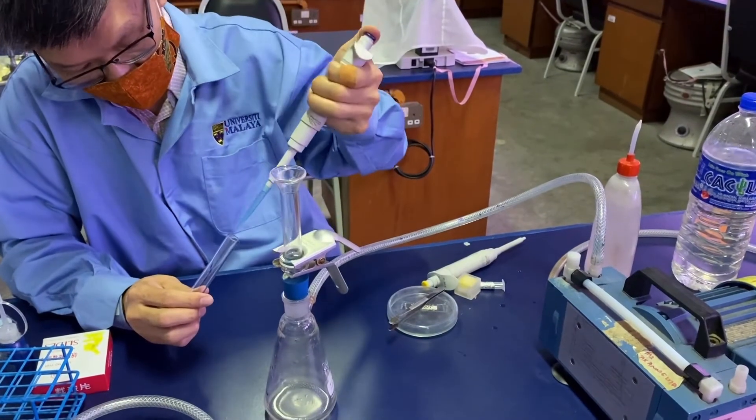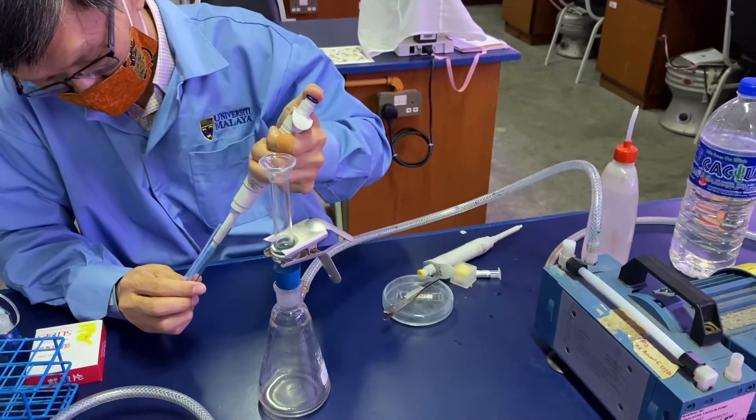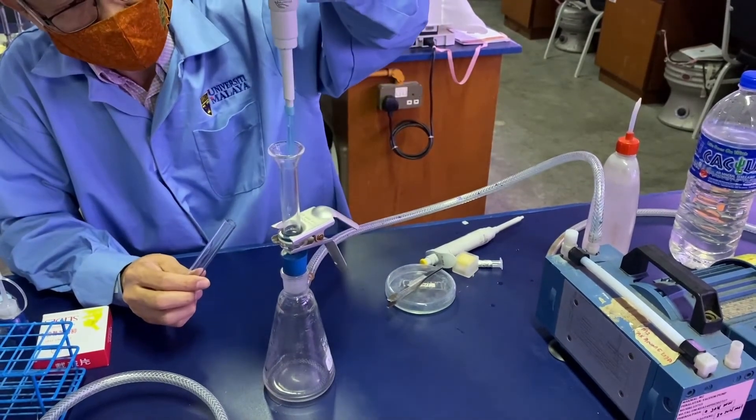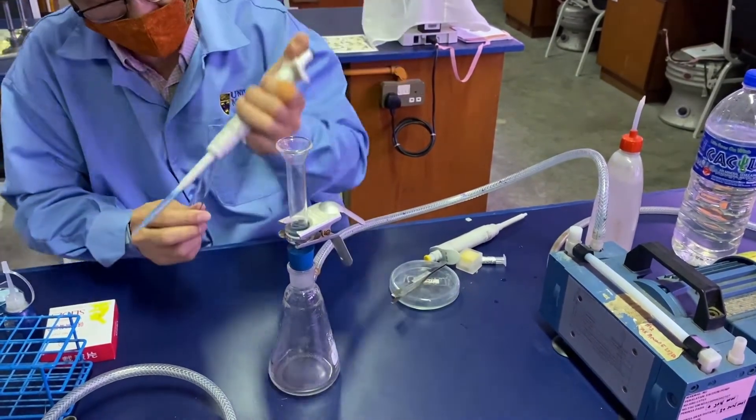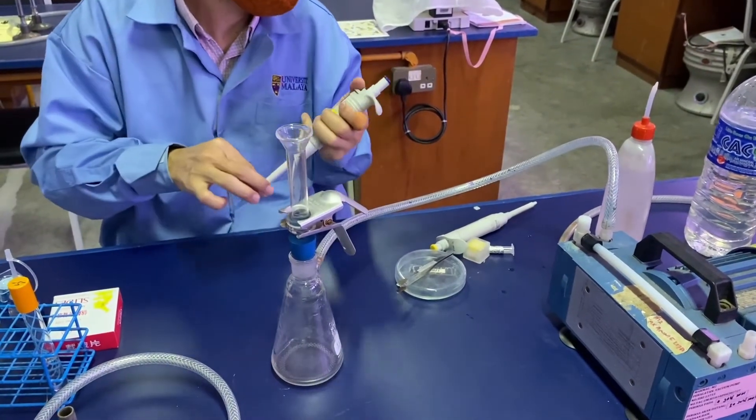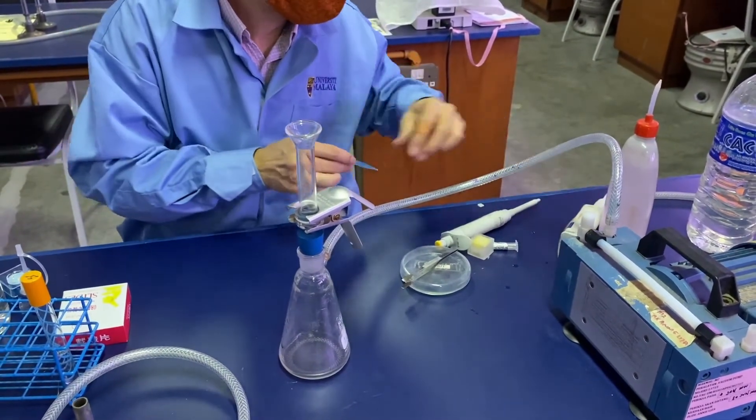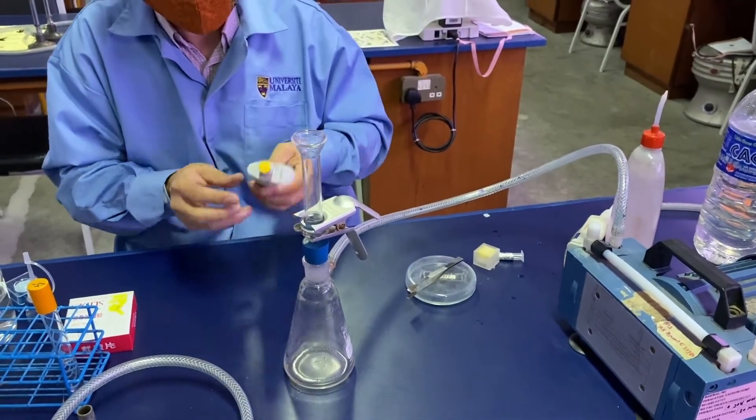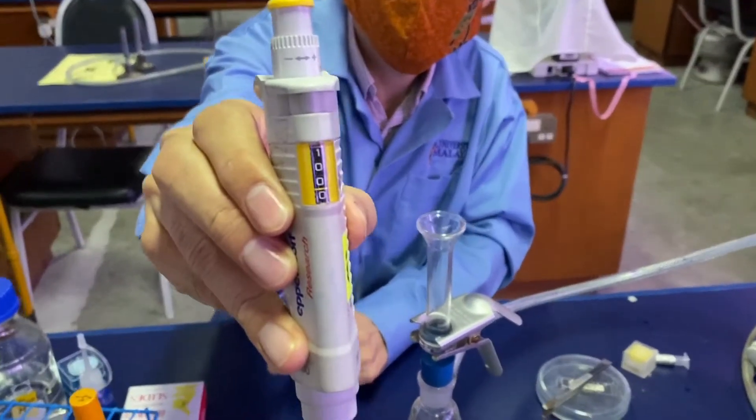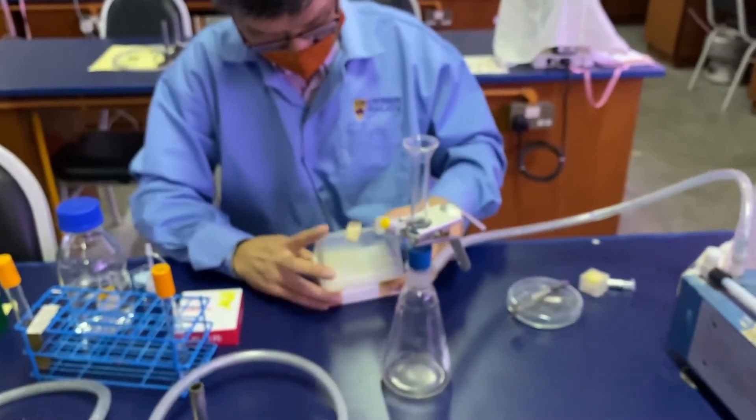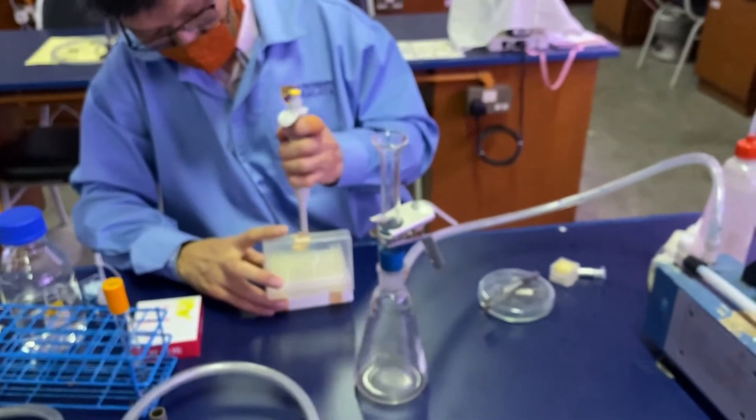Dispense two milliliters of sample onto the membrane filter, into the filter funnel. Next we will place the fluorochrome stain. This yellow micropipette is set at 100 microliters or 0.1 milliliters.